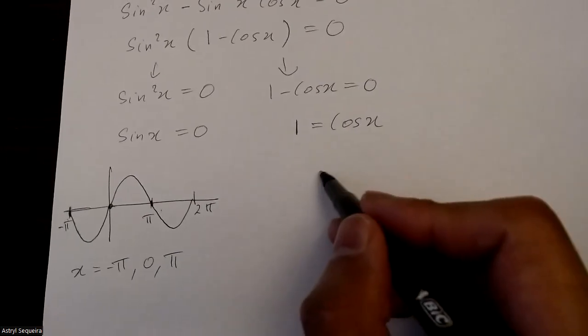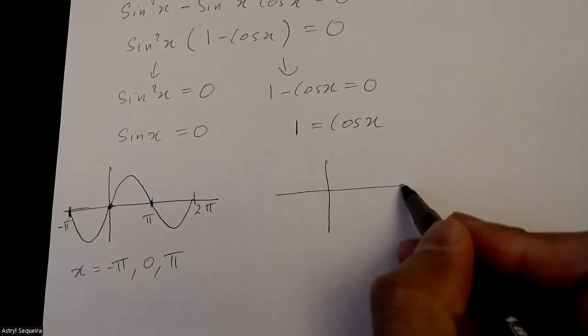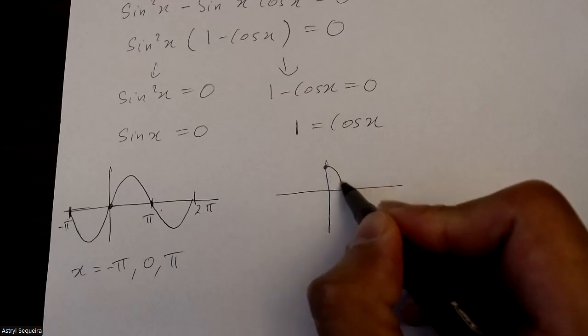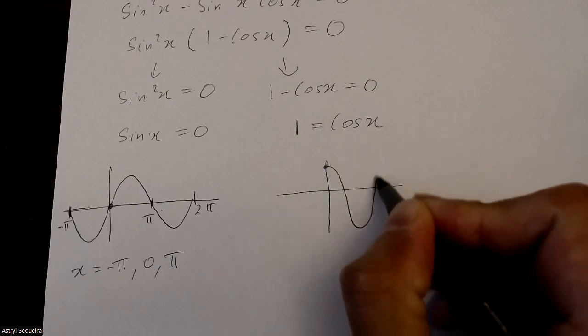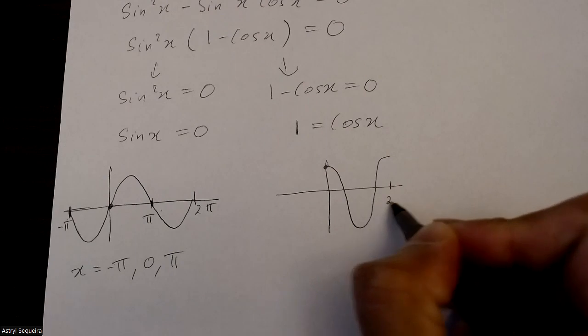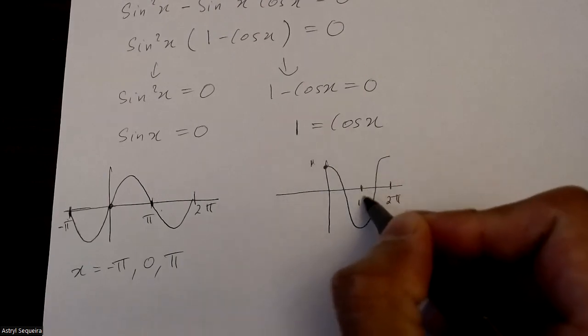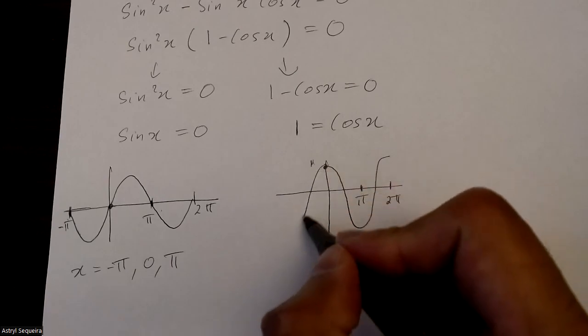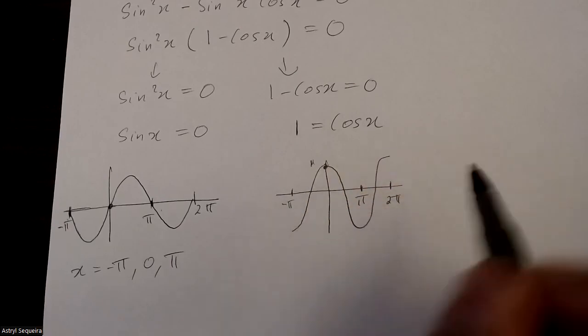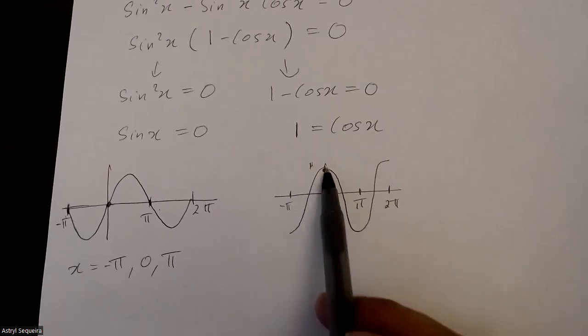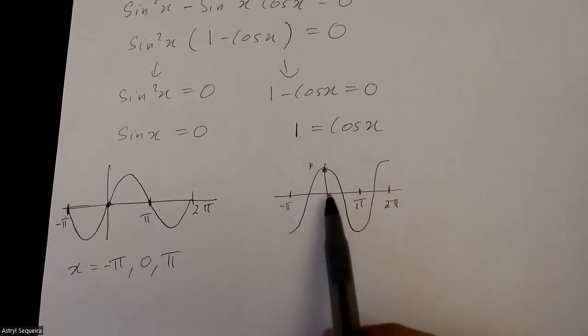And I'll do the same thing over here for cos x equals 1. So if I draw my cos graph, that's 2 pi, this is 1 by the way, this is pi, and then if I extend it on this side, this would be negative pi. So the only place where cos x equals 1 is just over here and x is 0. But we've already included this solution over here.